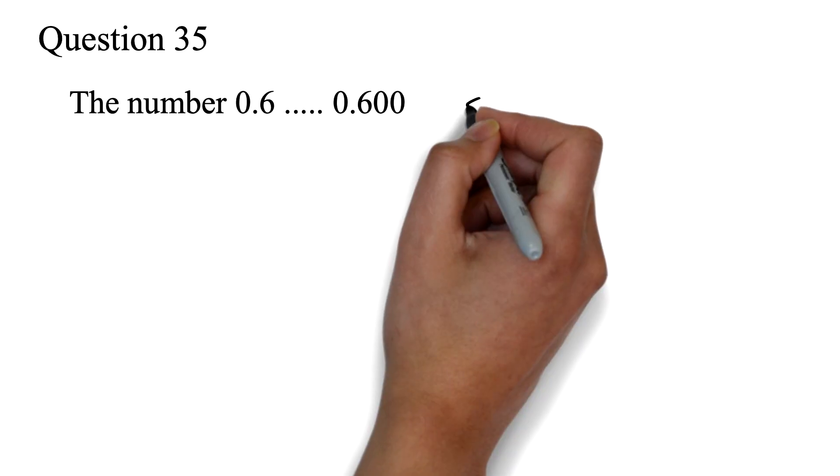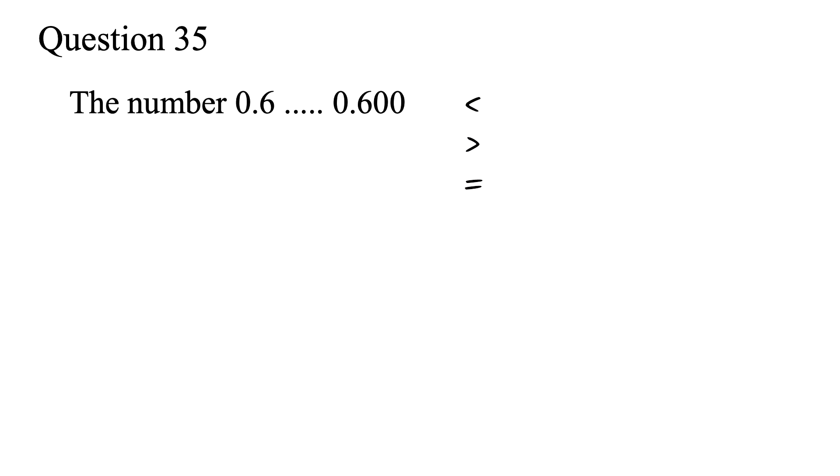Question 35. The number 0.6 is less than, greater than, or equal to the number 0.600. Here we are comparing these two numbers. I see so many students get a question like this wrong.